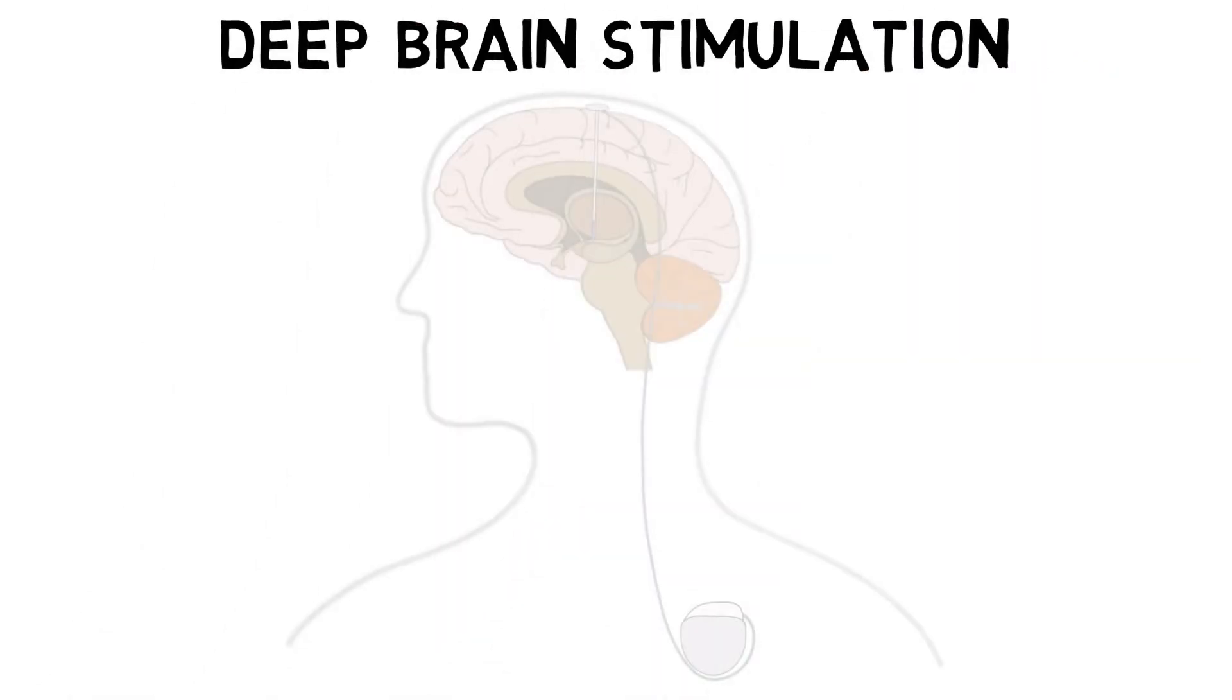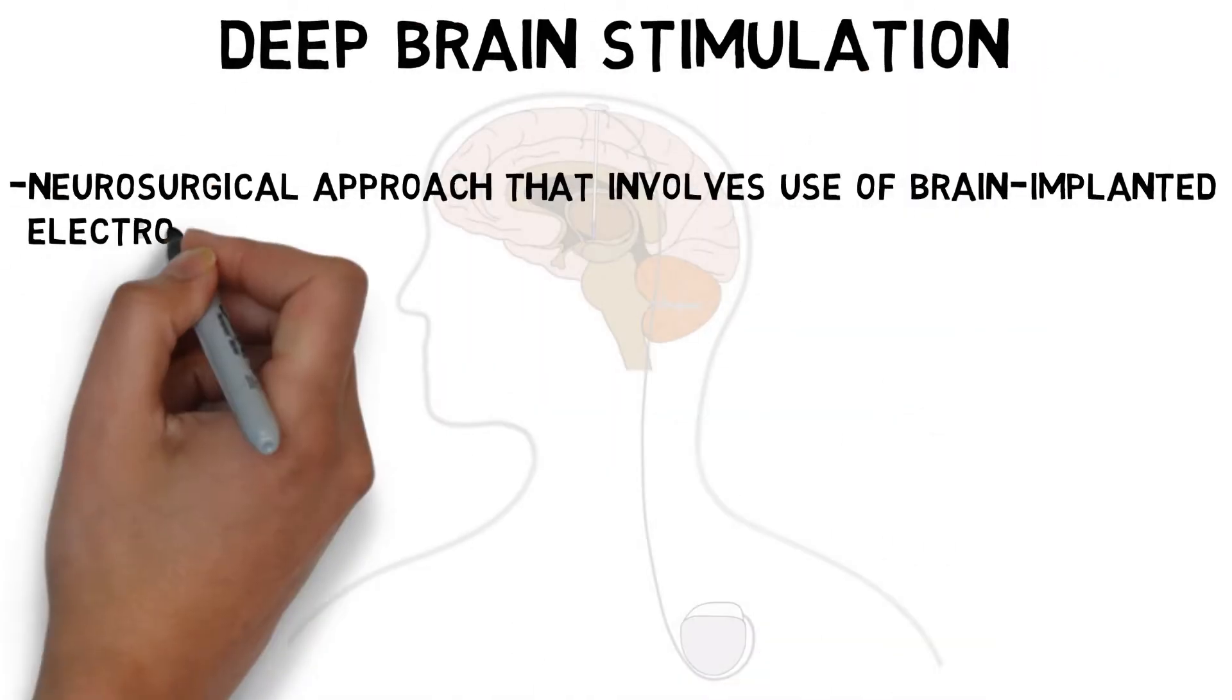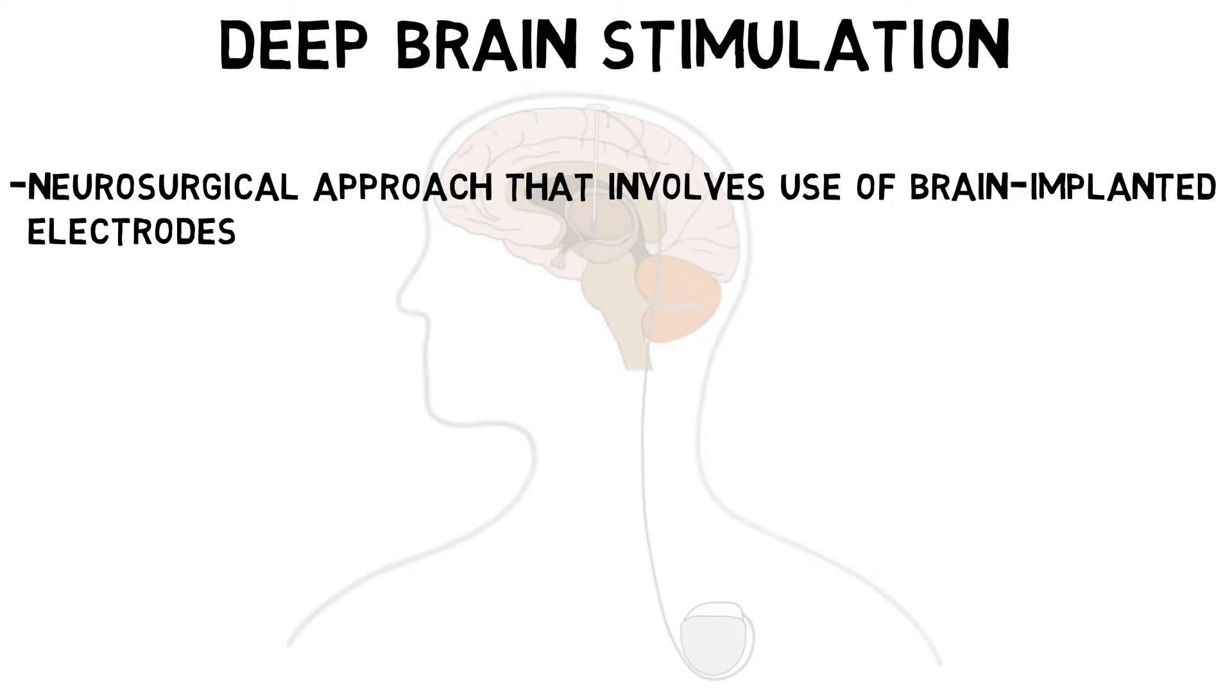Deep Brain Stimulation is a neurosurgical approach that involves the use of brain-implanted electrodes to treat a variety of neurological and psychiatric conditions.